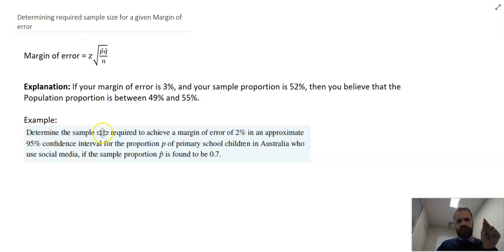If you're trying to determine your sample size before you've done your survey, how on earth do you know that the sample proportion is found to be 0.7? That would suggest I've already surveyed people, I've already determined my sample size.